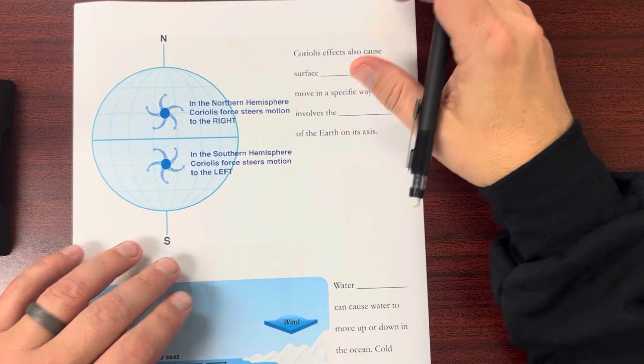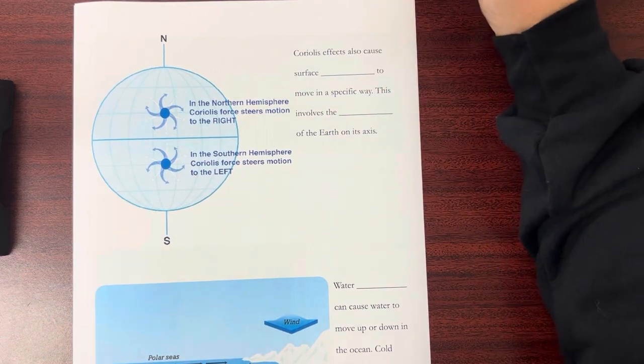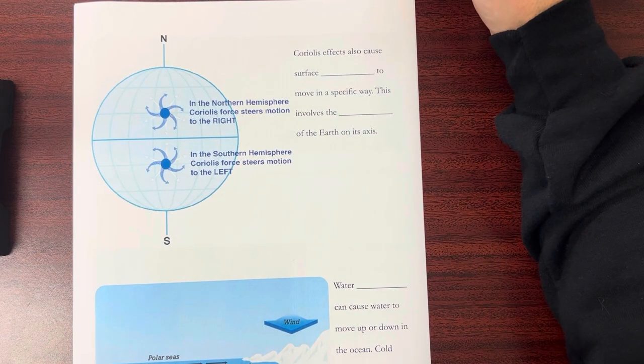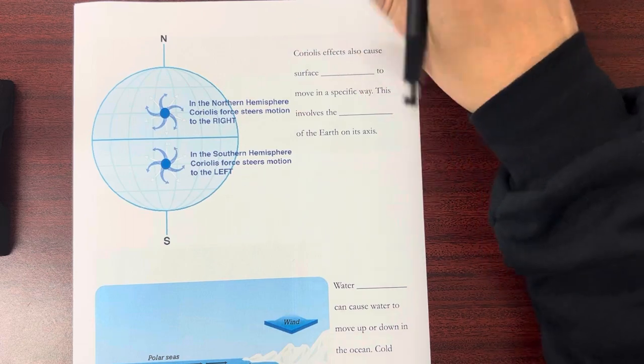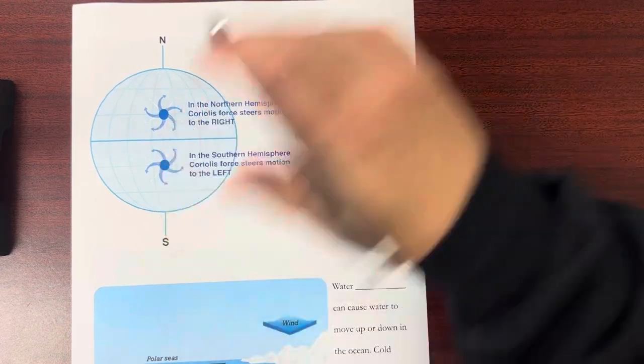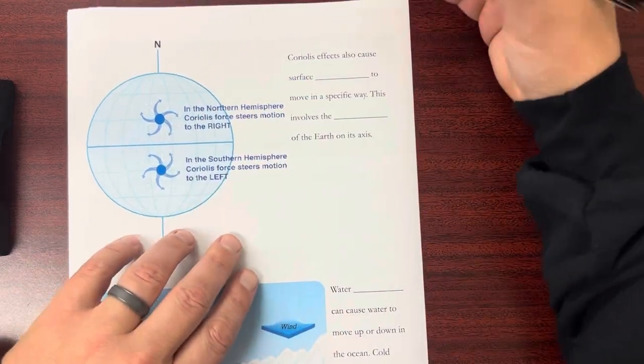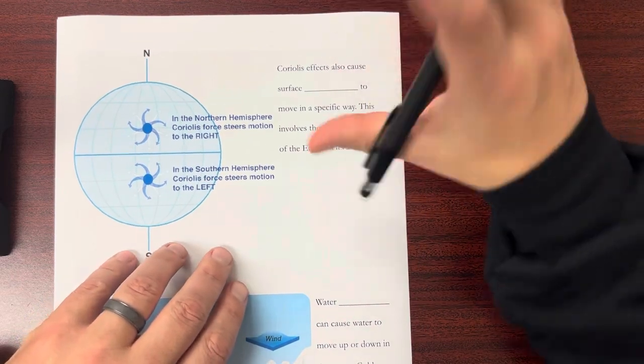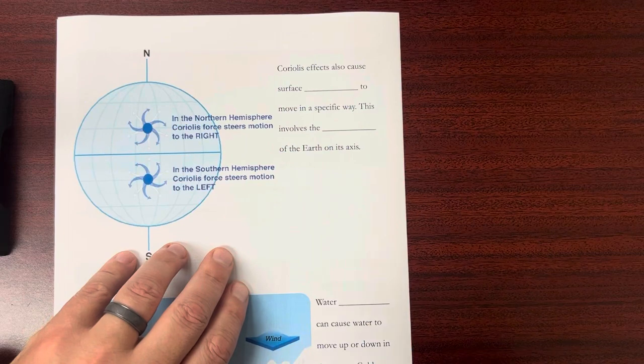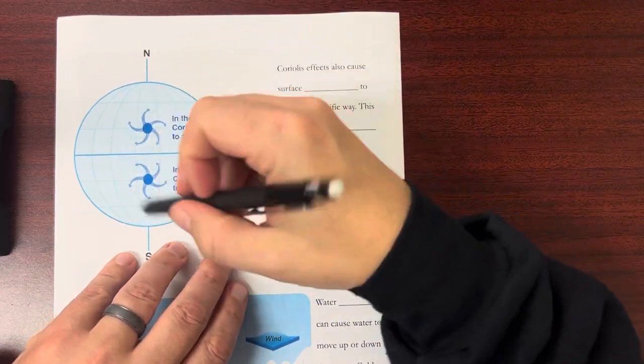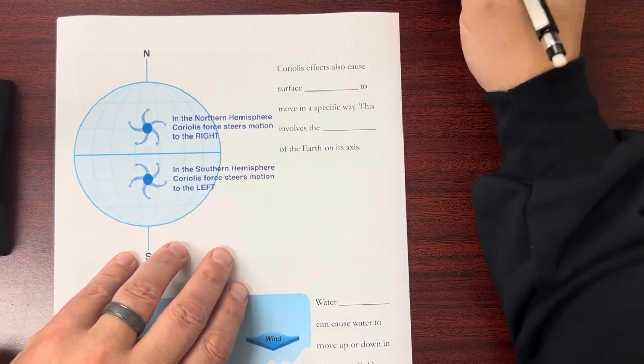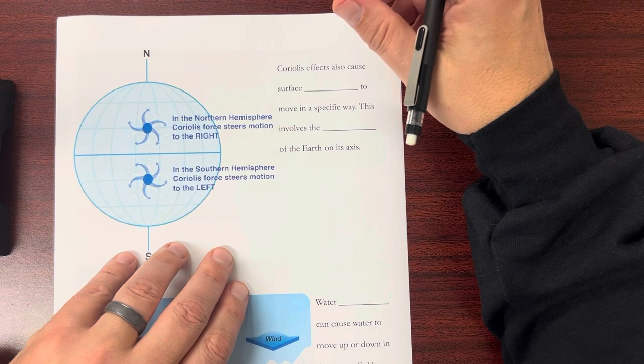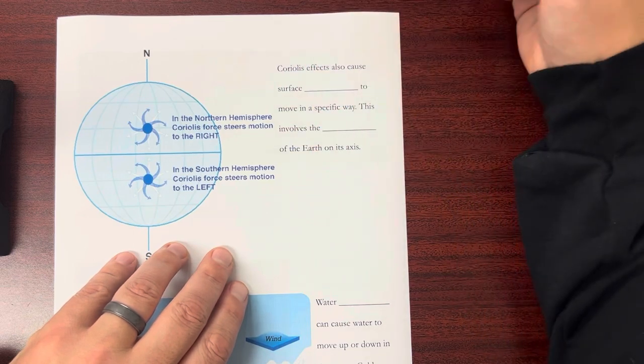So we said that the atmosphere and the wind in the atmosphere causes a lot of these surface currents but also there's something called the Coriolis effect. And without getting too deep into it the Coriolis effect has to do with the rotation of the earth and it causes spinning. It causes these masses of air or ocean to spin in certain directions.